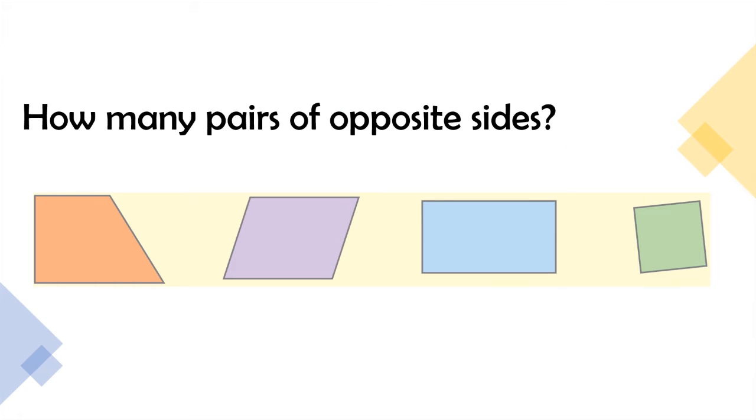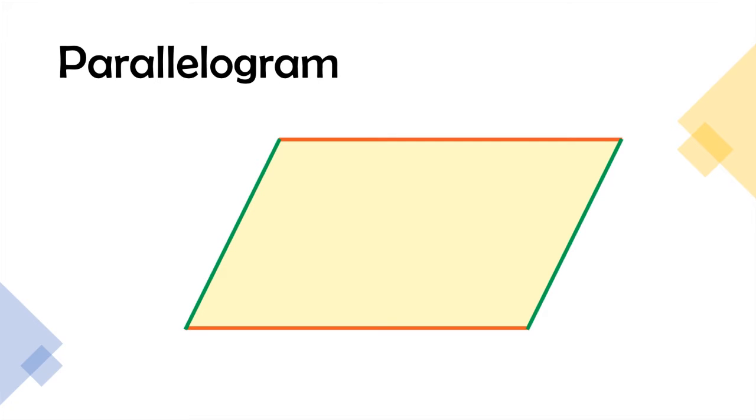How many pairs of opposite sides does a quadrilateral have? Can you help me to count it out? Correct! It has two pairs of opposite sides. We show it in different colors. Parallelogram is a type of quadrilateral as it has two pairs of opposite sides, one and two.